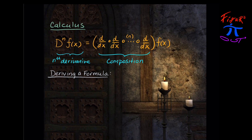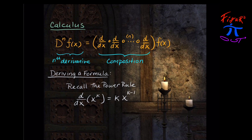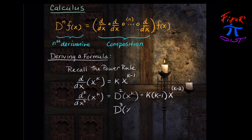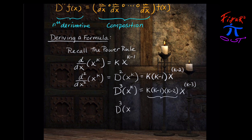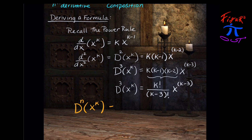It would be nice if we could derive a formula that tells us what the n-th derivative is, so that we could just plug n into that formula. Recall the power rule: the derivative of x to the k-th power is k times x to the k-minus-1 power. Differentiating a second time gives k times (k−1) times x to the k−2 power. A third time gives k(k−1)(k−2) times x to the k−3 power, where the coefficients can be rewritten as k-factorial over (k−3)-factorial. Generalizing, the n-th derivative of x to the k is k-factorial over (k−n)-factorial times x to the (k−n) power.